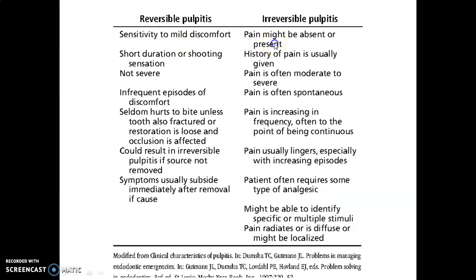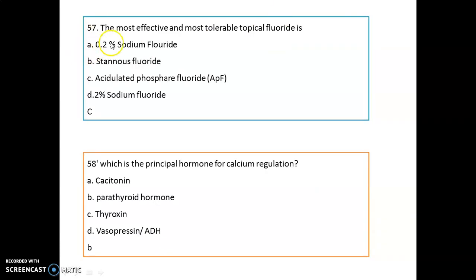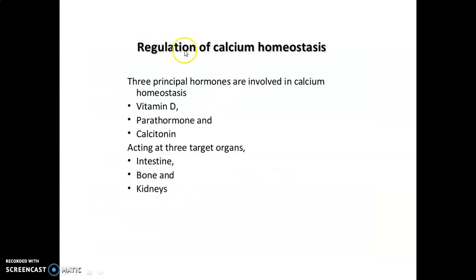The most effective and most tolerable topical agent — focusing on both 'effective' and 'tolerable' — is EPF gel. Regarding calcium regulation, the principal hormone is parathyroid hormone (PTH). Three hormones are involved in calcium homeostasis: Vitamin D, parathormone, and calcitonin. They act on three target organs: the intestine, bone, and kidneys.